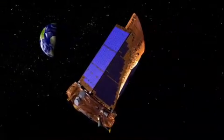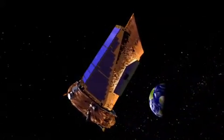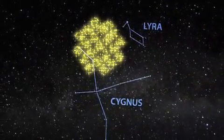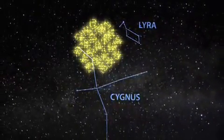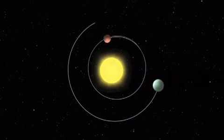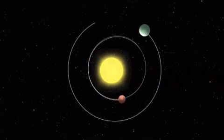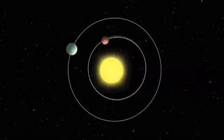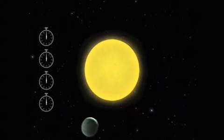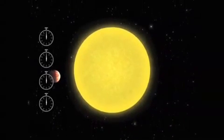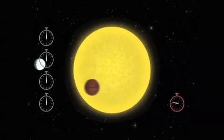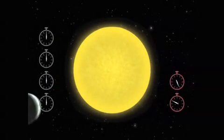NASA's Kepler mission has discovered the first confirmed planetary system with more than one planet transiting the same star. The announcement of the discovery of the two planets, Kepler-9b and 9c, is based on seven months of observations of more than 156,000 stars being monitored for subtle brightness changes as part of an ongoing search for Earth-sized planets outside our solar system. Scientists designated the Sun-like star Kepler-9.